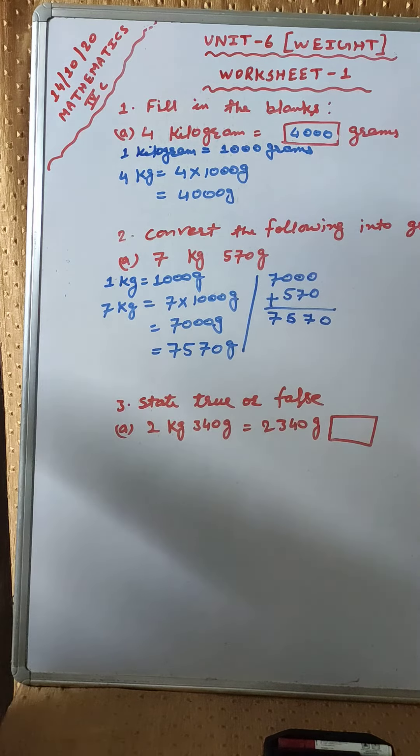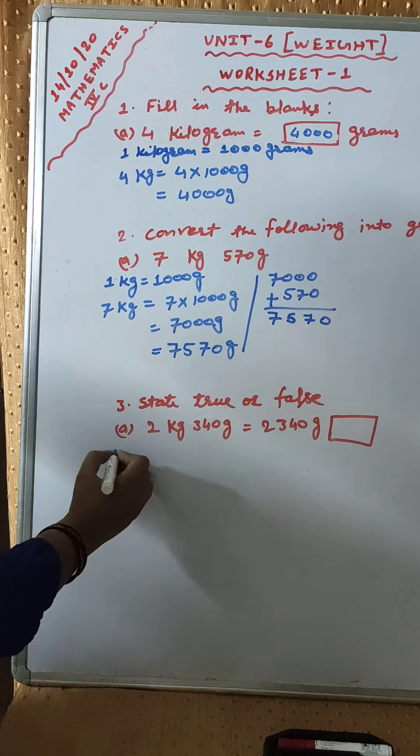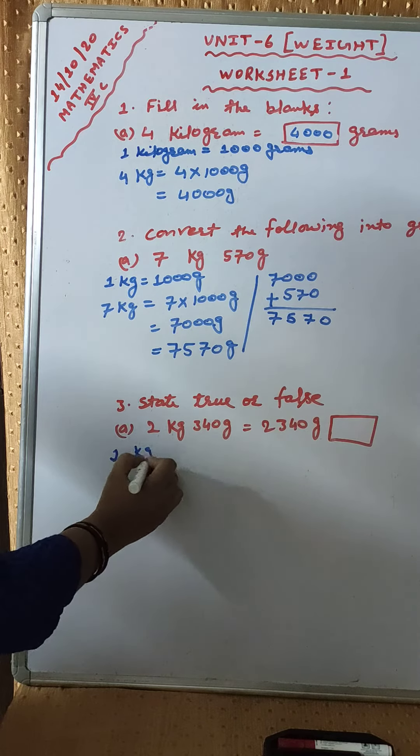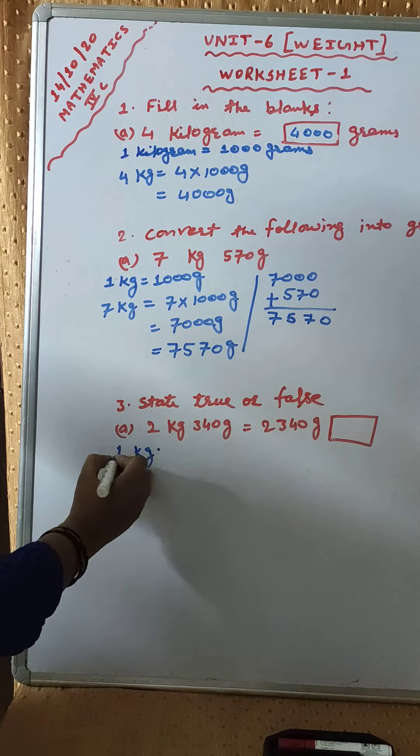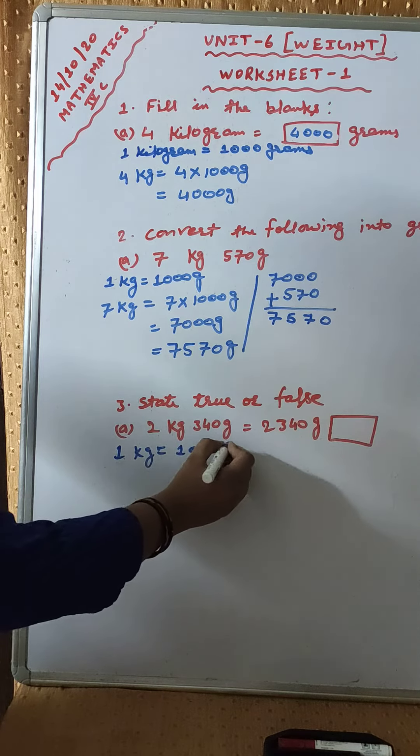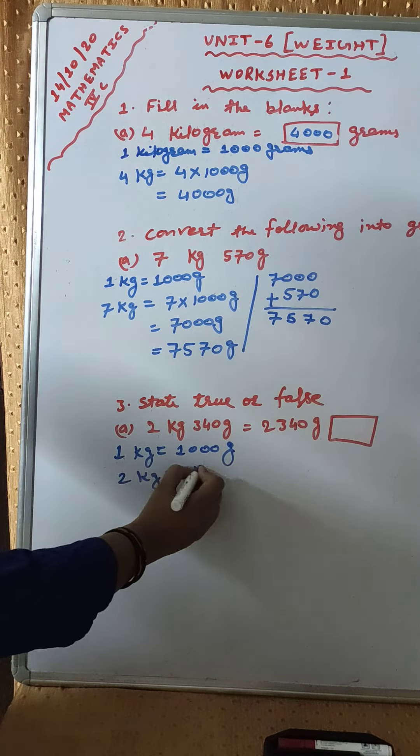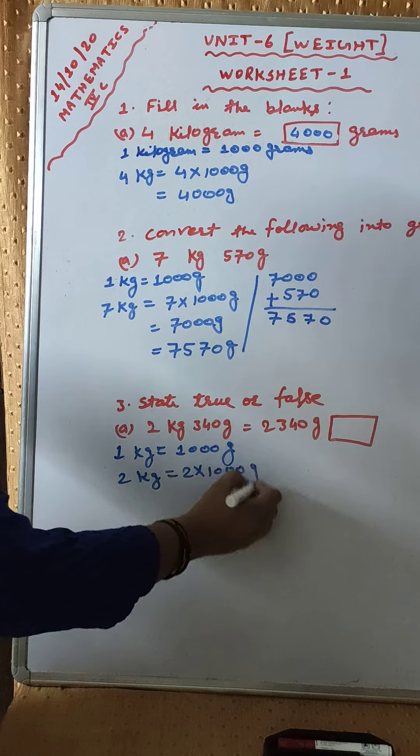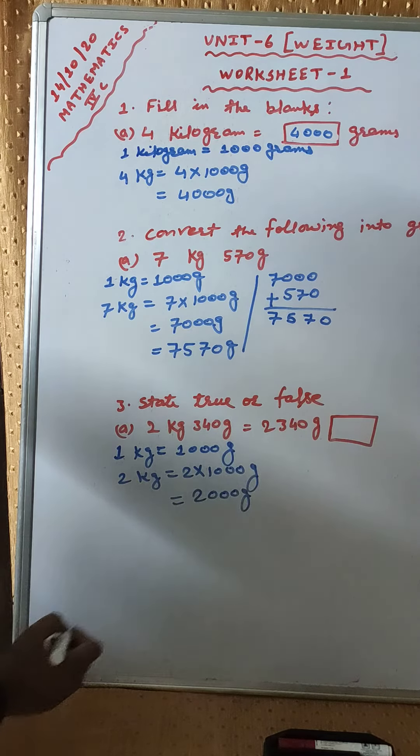Question number 3. State true or false. You will also do rough work for this question. 1 kilogram equal to 1000 grams. And 2 kilogram equal to 2 into 1000. That will be 2000 grams.